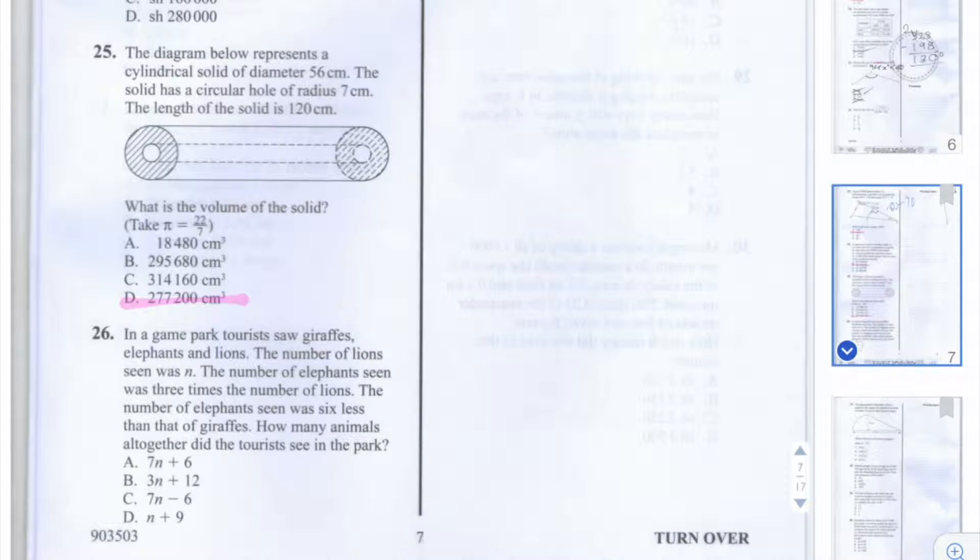Let's start with the number of lions. We know the number of lions seen is n, and the number of elephants seen was three times the number of lions. So the number of elephants seen was 3n.